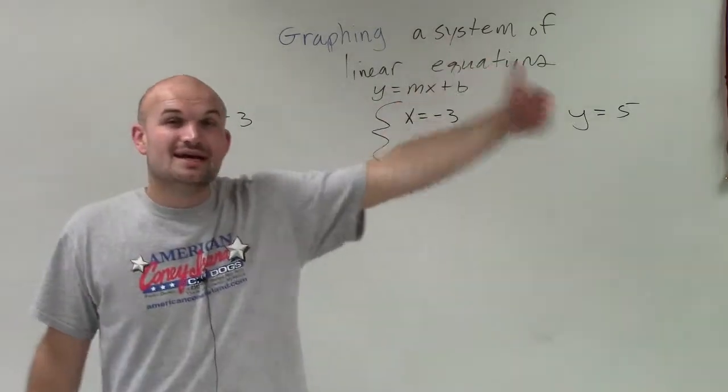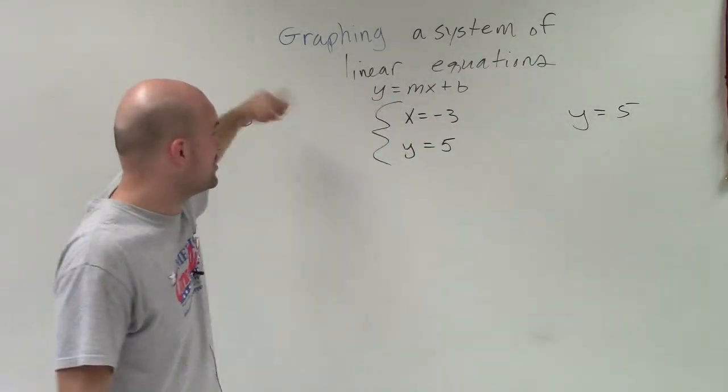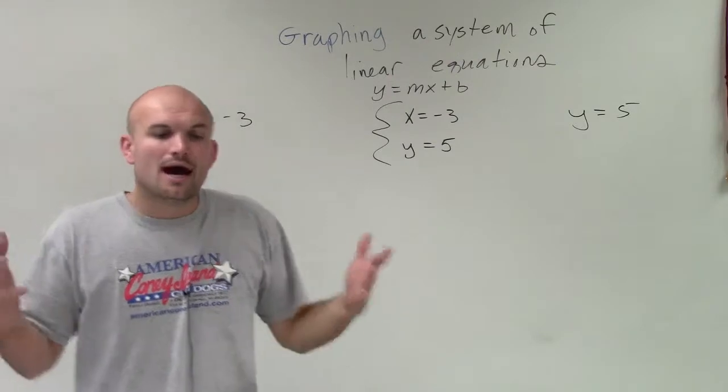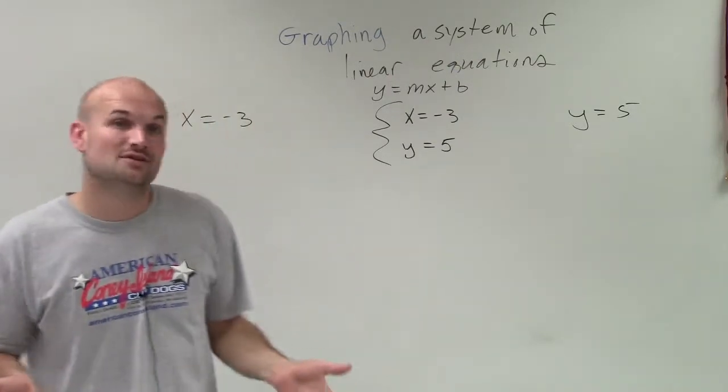However, x equals negative 3 is not a linear function. We can't write it in slope-intercept form, but we can still graph it and it is still going to create a line.